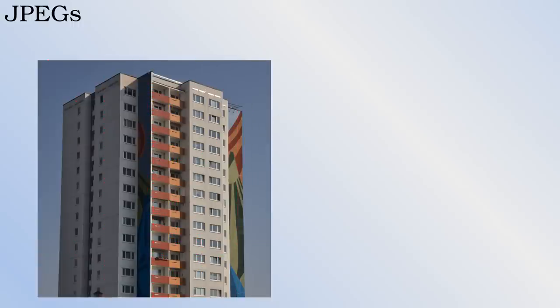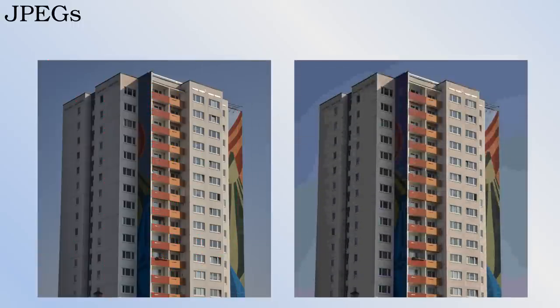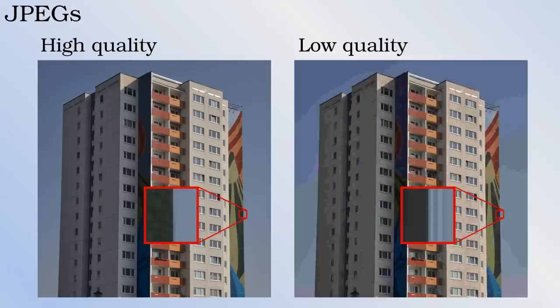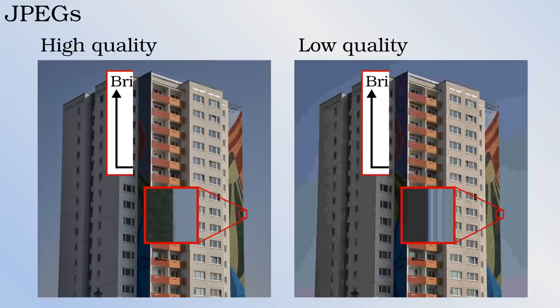JPEGs with a low quality and therefore a small file size relative to the size of the image store very few of the waves required to reconstruct the image. This leads to artefacts. Here are JPEGs of an apartment building in high and low quality. If we zoom in on a vertical edge of this building, we can see some of these artefacts. There appear to be vertical lines of the wrong colour next to the edges.